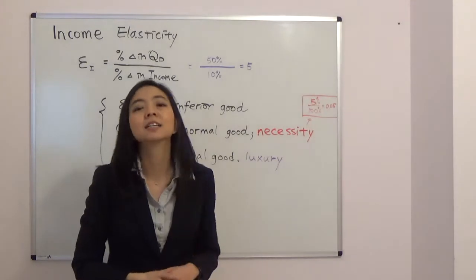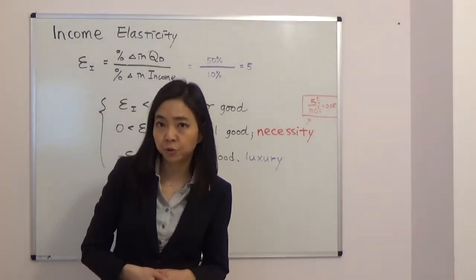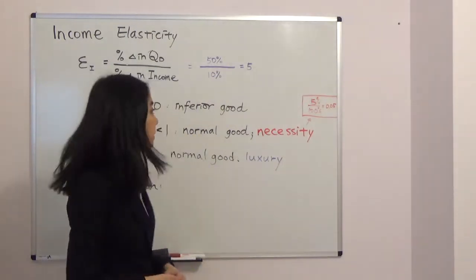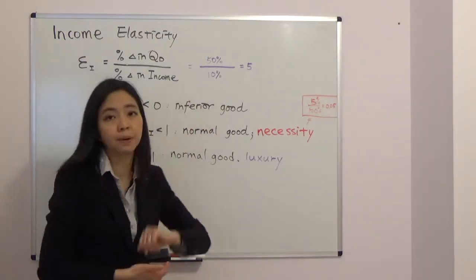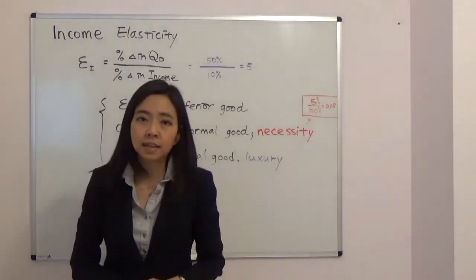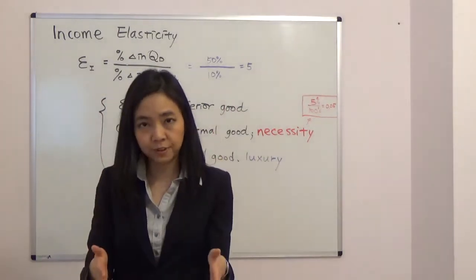So if your income goes up by 10% and your quantity demanded for a certain good increases by 50%, then your income elasticity will be equal to 50% divided by 10%, that gives you 5. And notice that you no longer take the absolute value of income elasticity because the sign of income elasticity actually has a meaning.